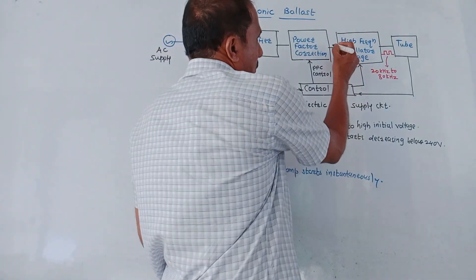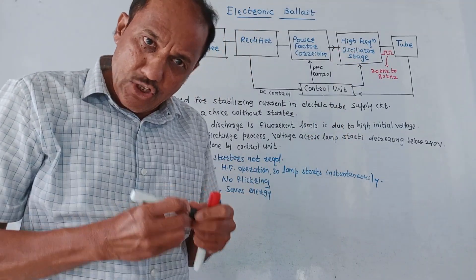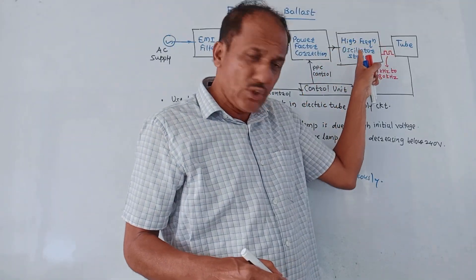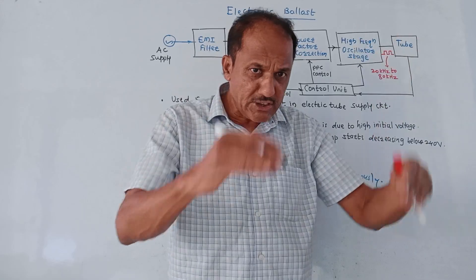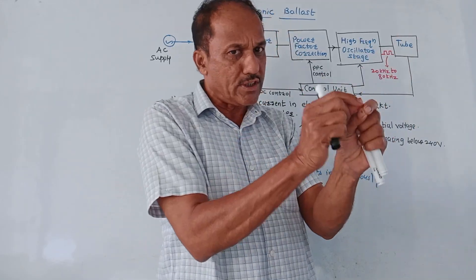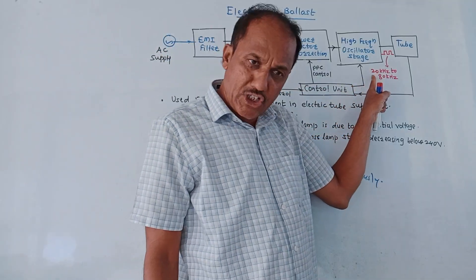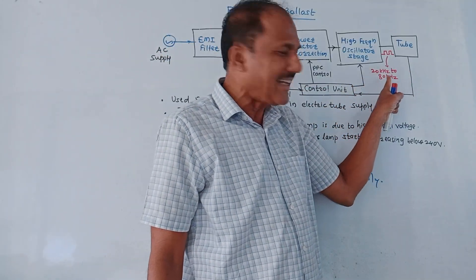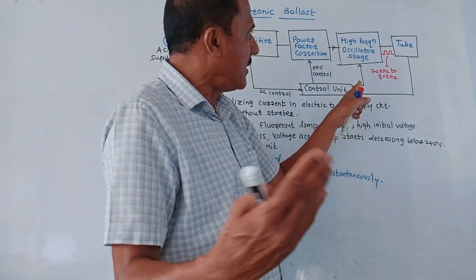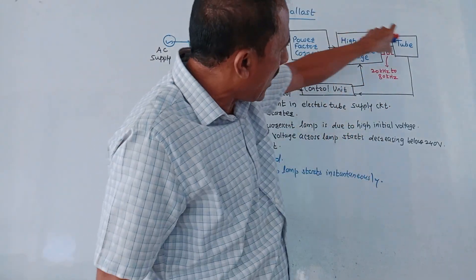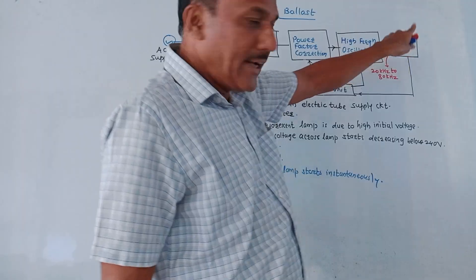So this high frequency oscillator stage converts DC signal into a square wave type of signal. Frequency of this square wave signal is in the range 20 kilohertz to 80 kilohertz, so which is at the higher frequency side, and its output is applied to the electric tube.